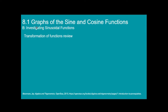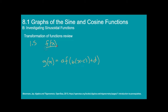This was way back in section 1.5 at the beginning of the year — we had transformation of functions. We looked at how you could take a function f(x) and transform it by doing various things to it. We said the new function g(x) is equal to a·f(bx - c) + d, and we looked at what each of these components did.